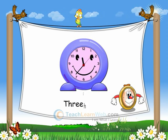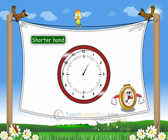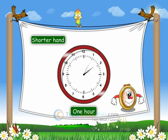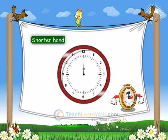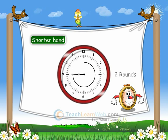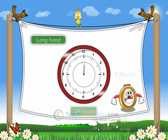A clock has three hands. The shortest is the hour hand, which moves one step when one hour is complete. When the hour hand completes two rounds on the clock, it is one full day. The long hand is the minute hand.